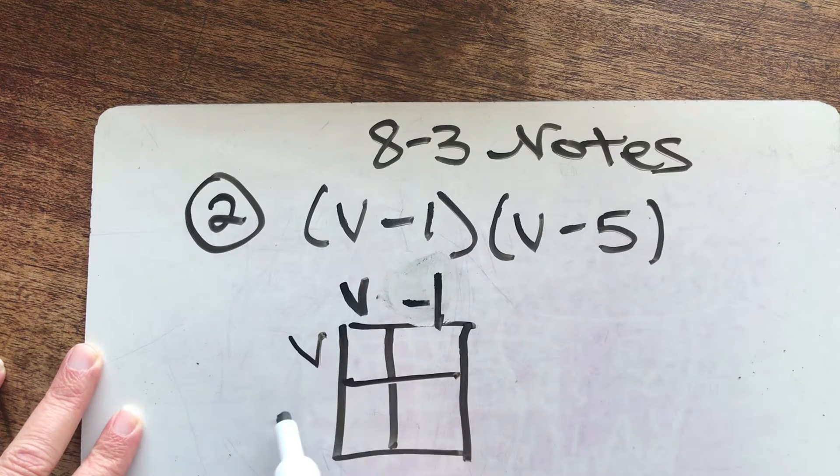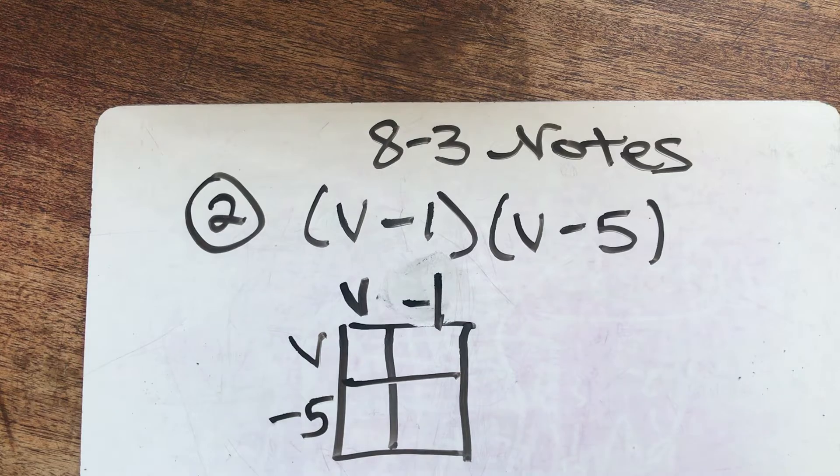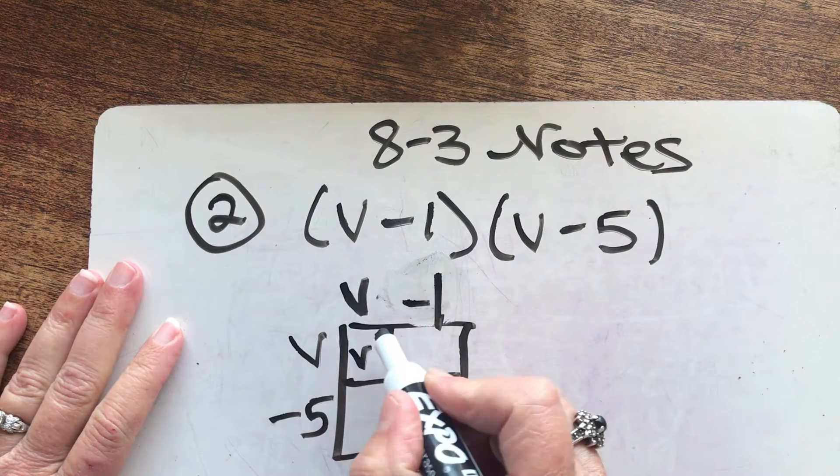And over here we're going to go V minus five. Now remember, how do we fill in our boxes? We multiply. So V times V, V squared.